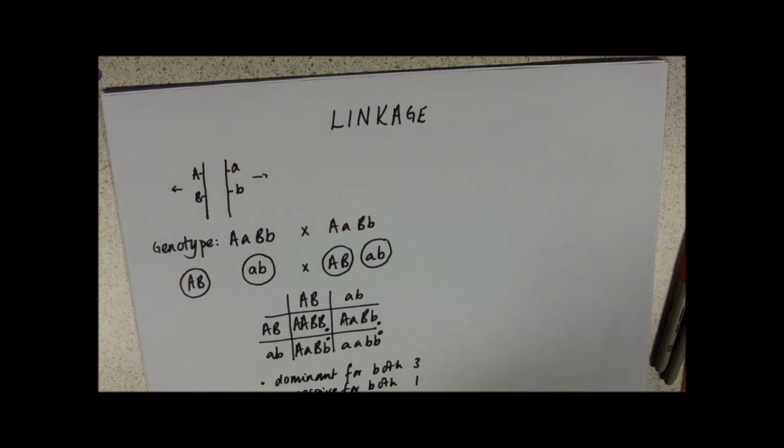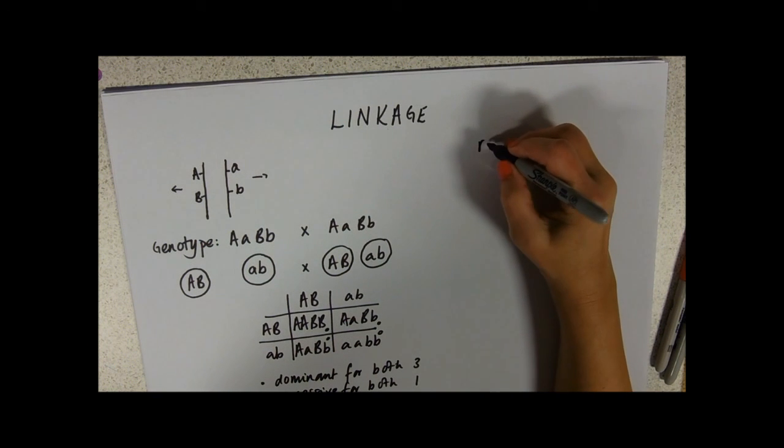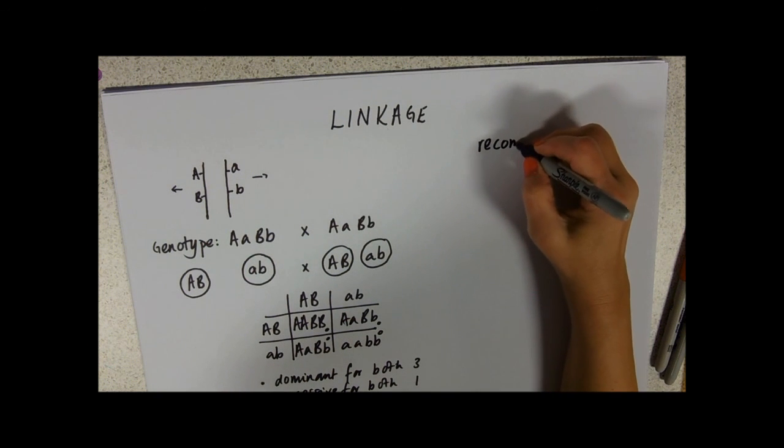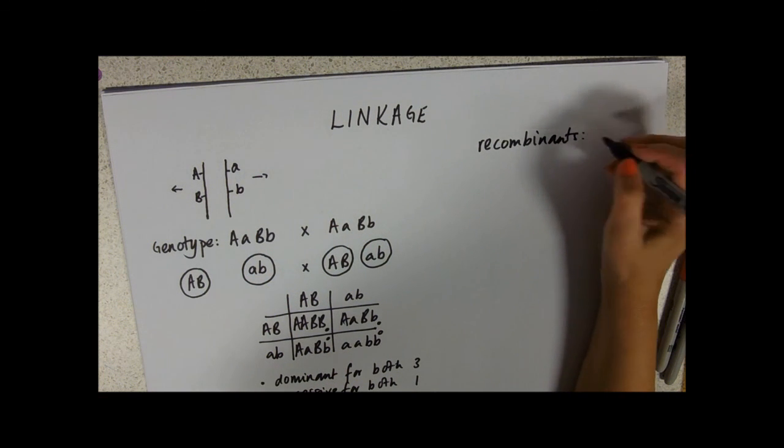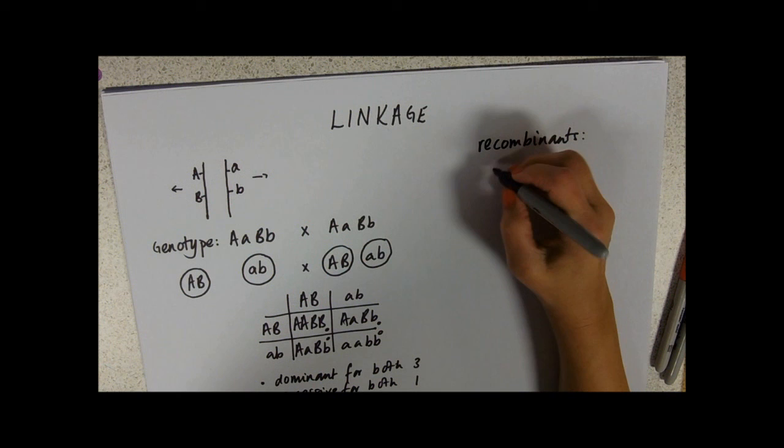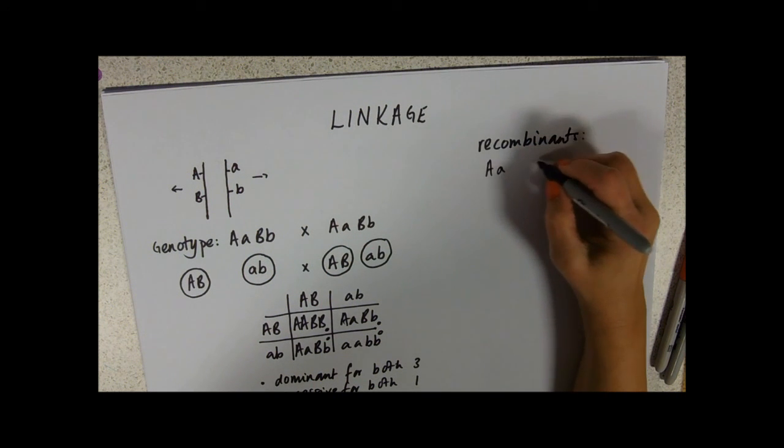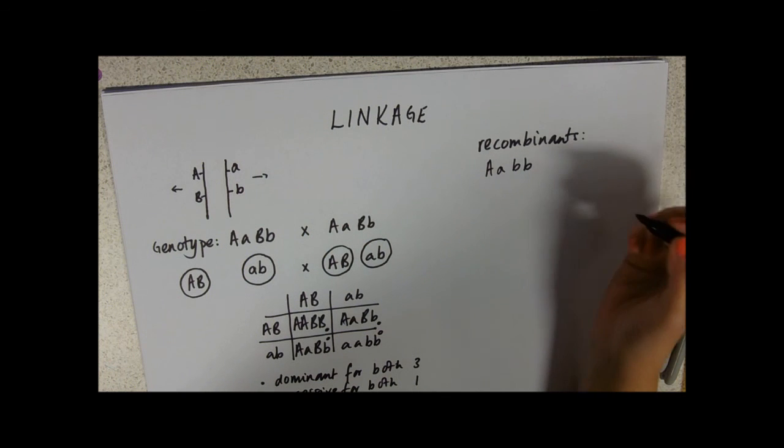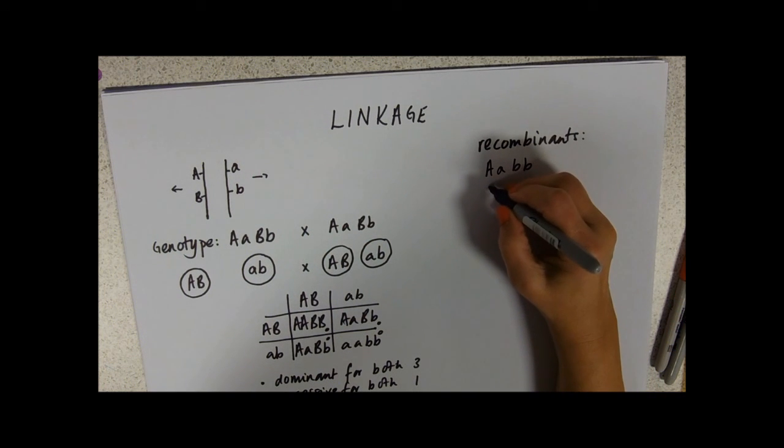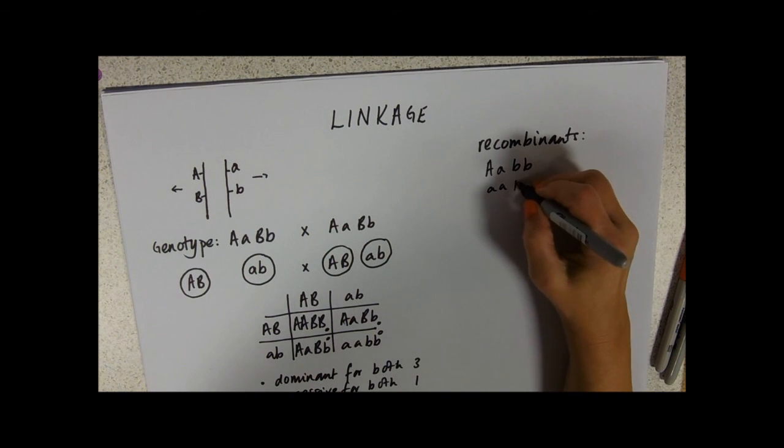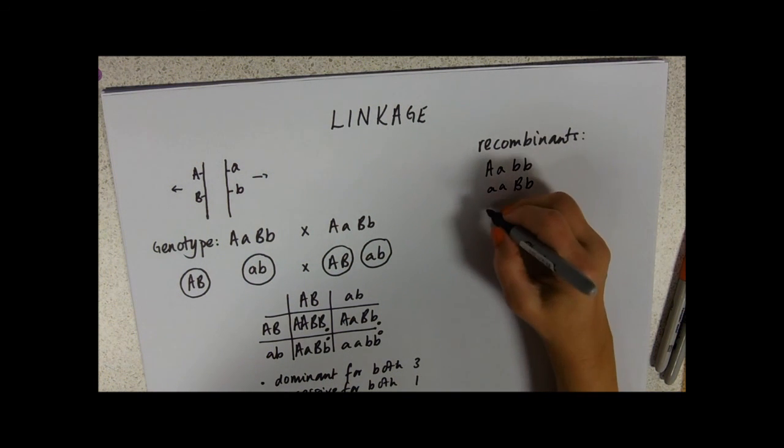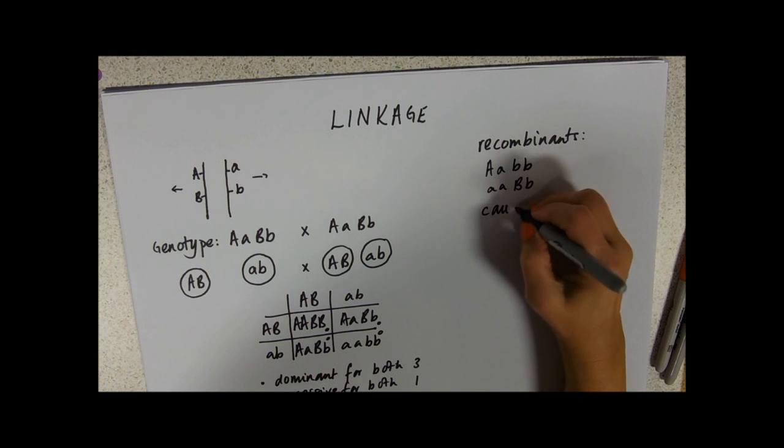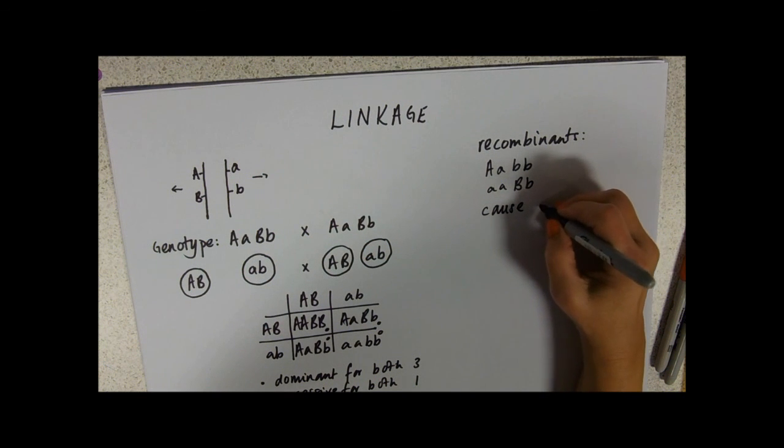Of course there are ways in which we can get some what we call recombinants. Recombinants would be the ones that would have the dominant allele for A perhaps, but the two little b alleles, or the other way around. And the cause of recombination is crossing over.